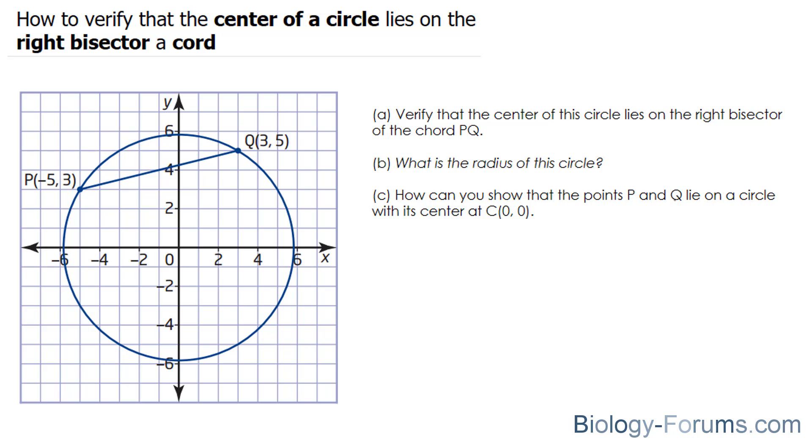The first one, verify that the center of the circle lies on the right bisector of the chord P and Q. So we have to show that the right bisector, which is the line that extends from the midpoint of this chord, lies at the center of this circle, which appears to be at 0 and 0.